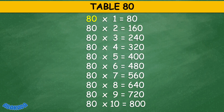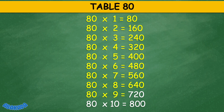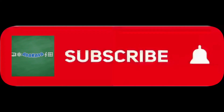Table 80: 80 times 1 equals 80, 80 times 2 equals 160, 80 times 10 equals 60, 80 times 3 equals 240, 80 times 4 equals 320, 80 times 5 equals 400, 80 times 6 equals 480, 80 times 7 equals 560, 80 times 8 equals 640, 80 times 9 equals 720, 80 times 10 equals 800. Thank you for watching.